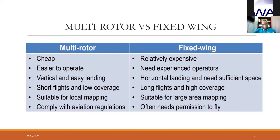The multi-rotor has short flights and low coverage, while the fixed-wing has longer flights and higher coverage. The multi-rotor is suitable for local or small area mapping, while the fixed-wing is suitable for large area mapping. For example, to fly the whole of Pram Pram in a day, I'd prefer the fixed-wing drone because it can cover a wider area in the shortest possible time. The multi-rotor generally complies with aviation regulations, while the fixed-wing often needs permission to fly, as you sometimes need to fly beyond visual line of sight and must get permission from the Aviation Authority.